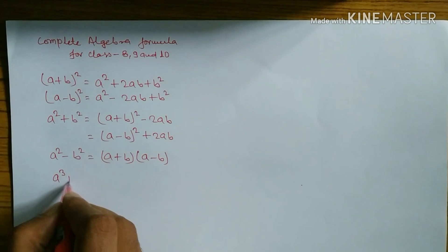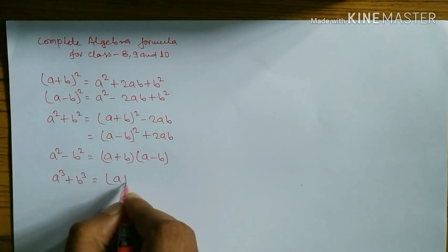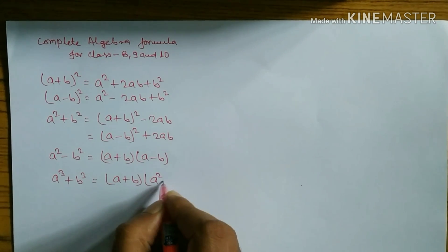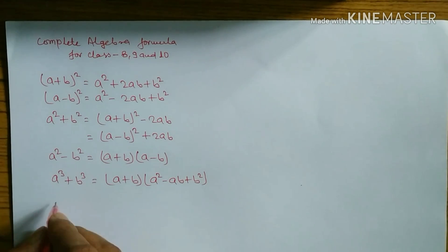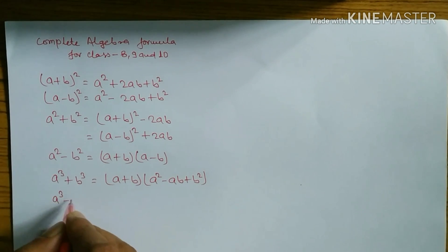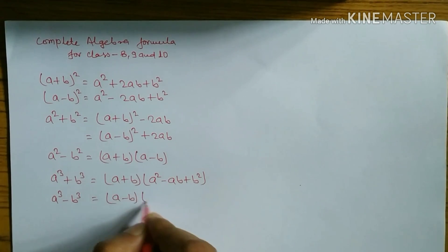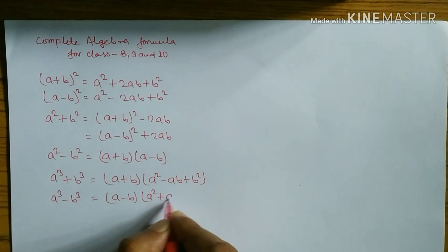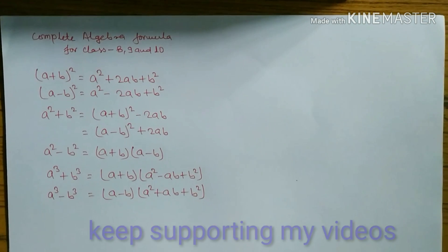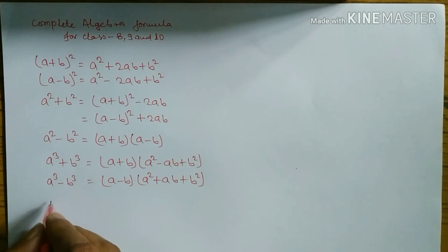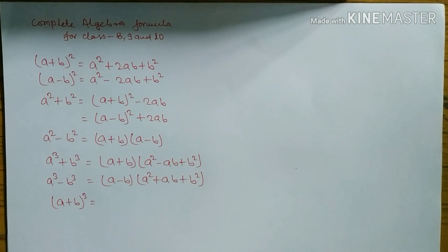The formula for a³ + b³ is (a + b)(a² - ab + b²). Similarly, the formula for a³ - b³ is (a - b)(a² + ab + b²).